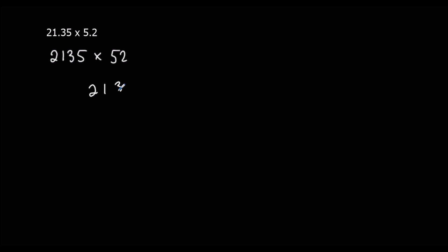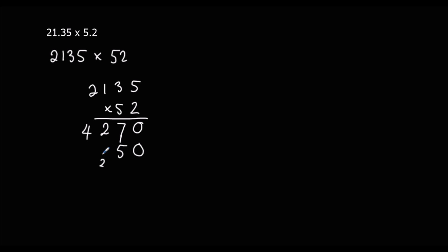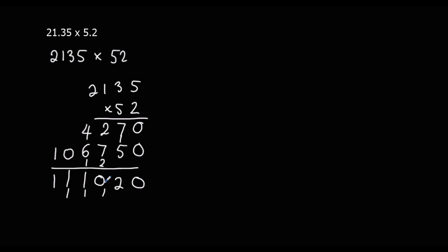For now we just answer 2,135 times 52 using the traditional method. We do 2 times 2,135 first: 2×5=10, write 0 carry 1; 2×3=6 plus 1 is 7; 2×1=2; 2×2=4. Then multiply by 50, so add a zero, and do 5×2,135: 5×5=25, write 5 carry 2; 5×3=15 plus 2 is 17; 5×1=5 plus 1 is 6; 5×2=10. Adding down: 0+0=0; 0+7=7, wait — we get 111,020.